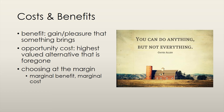Economists also assume that people choose at the margin. This means that people compare the benefit of consuming a little more of a good with the cost of consuming a little more of that good. The marginal benefit is the benefit derived from consuming one more unit of a good, and the marginal cost is the opportunity cost of consuming one additional unit of a good.